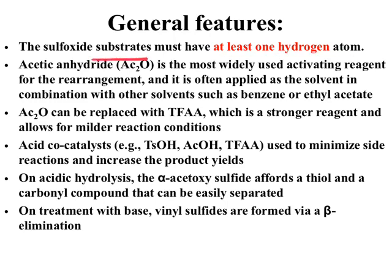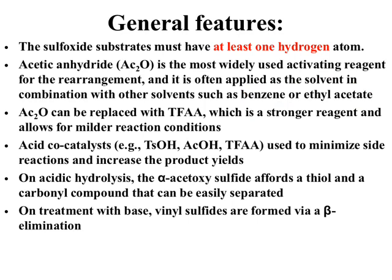We use acetic anhydride, which acts as an activating reagent for the rearrangement. Because of this, the rate of reaction increases and the reaction occurs very rapidly. Sometimes acetic anhydride is used with solvents such as benzene or ethyl acetate to make the reaction more effective and to get better yield. If acetic anhydride is not available, then we use TFAA, which is trifluoroacetic anhydride — that is also a strong reagent and we can carry out the reaction under mild conditions.